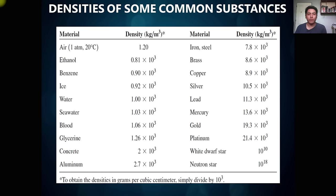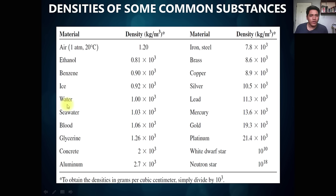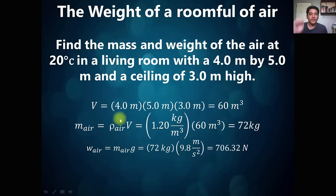Here are some densities of common substances. The most common is water, with a density of 1×10³ kg/m³. For air, it is 1.2 kg/m³. We also have ethanol, benzene, ice, and different elements. We need to take note especially of the density of water — 1×10³ kg/m³ — because sometimes it is not given in the problem.